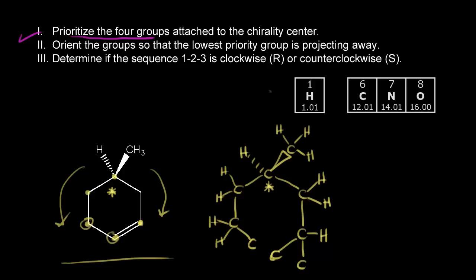What's directly attached to this carbon? There's a hydrogen, and three carbons. Carbon beats hydrogen in terms of atomic number, so hydrogen is the lowest priority group — we assign it group number four. Now we have a tie with three carbons, so we need to see what those carbons are directly bonded to. The top carbon (methyl) is bonded to hydrogen, hydrogen, hydrogen. The carbon on the right is bonded to carbon, hydrogen, hydrogen. And the carbon going the other way is also bonded to carbon, hydrogen, hydrogen.